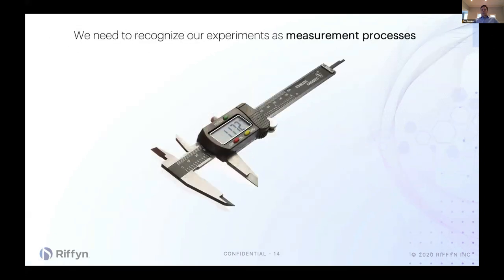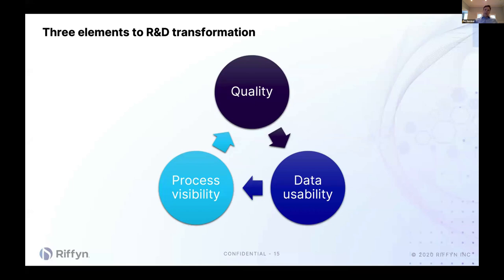When you recognize that experiments are measurement processes, you can take the total quality approach. The three core pillars in my mind are process visibility, which leads to higher quality processes, which leads to better data, which leads to improved processes — a positive cycle of improvement that ultimately leads to data you can trust, that's meaningful and contextualized, that can be put into deep machine learning algorithms and visualizations. And when that happens, the R&D cycle goes faster and faster, and the cost will drop from $2.6 billion per drug to a lot less than that.